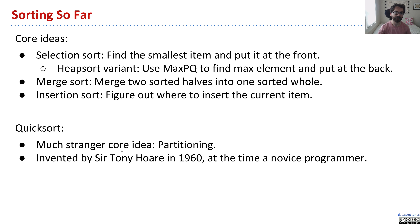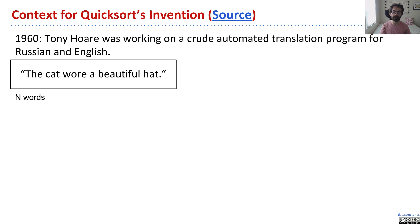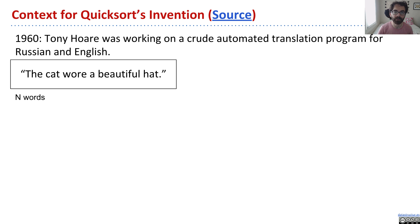Back in 1960, Tony Hoare was a novice programmer. He had finished an undergraduate degree and was a graduate student in Moscow — he was from the UK, but he was in Moscow. He was studying the problem of machine translation of languages. He was hoping to build a tool that was, roughly speaking, given a sentence in English containing n words, he wanted to convert it into a Russian sentence that captured the same basic notion. This was not a translation that tried to take into account conjugation and all the complex ideas important in machine translation.